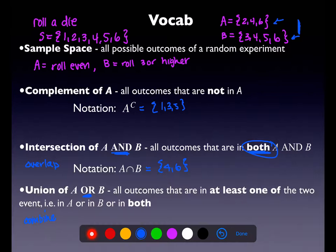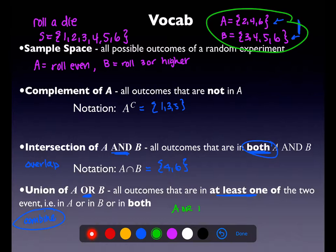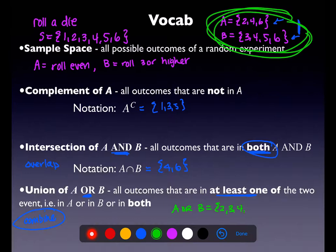For the union, we're looking for outcomes in at least one of the two events — just in A, just in B, or in both. An easier way to think about it: just combine the two lists into one and ignore repeats. Looking at both lists, A or B = {2, 3, 4, 5, 6}.